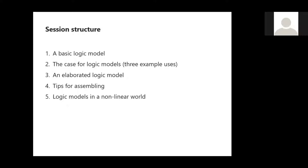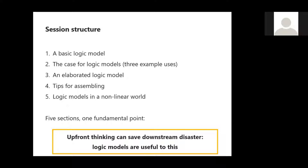We've got five sections, but really I'm only going to make one fundamental point. It seems to me that we underuse upfront thinking in health and social sectors. We too often leap to solutions — things which seem like the right thing to do — without really kicking the tires hard enough. Logic models are a very useful tool to try to prevent mistakes at the design stage of initiatives, and to really do that thinking upfront in theory before you get going in practice.